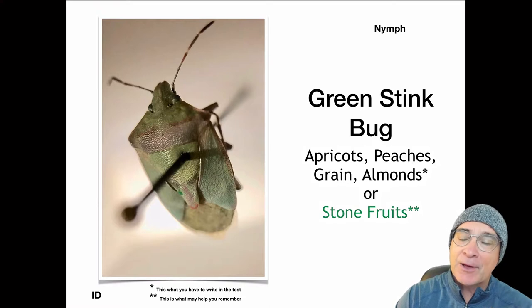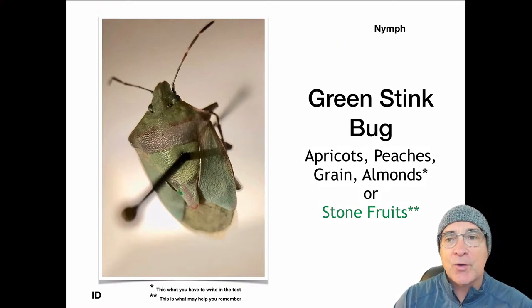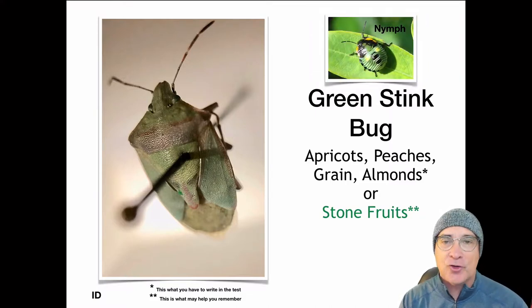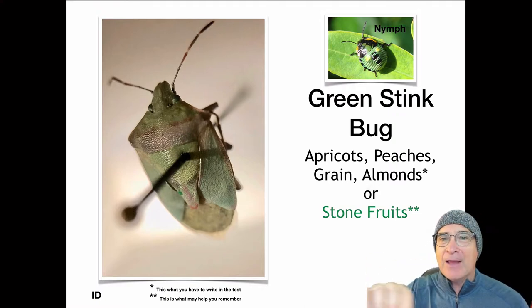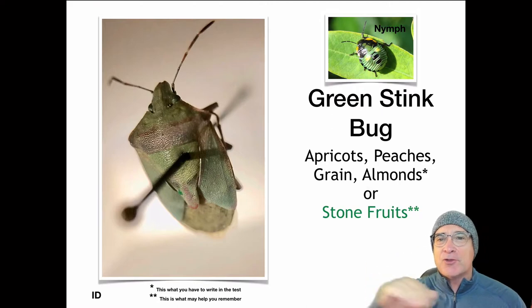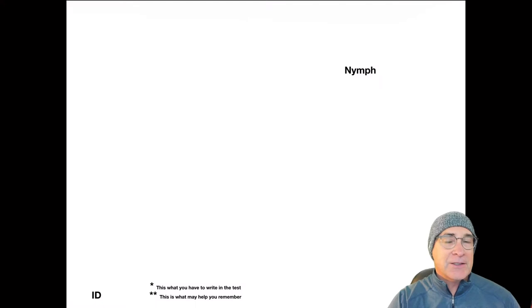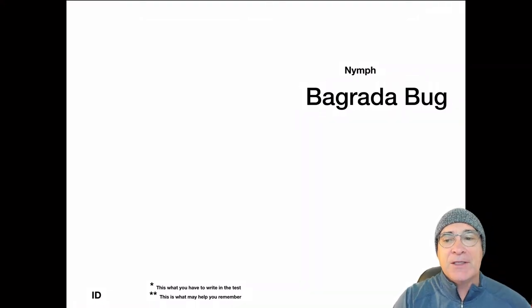Stink bugs primarily focus on stone fruits — again, apricots, peaches, almonds, and grains. This particular one looks like a squeeze toy you'd give to your dog. It has three, sometimes two, really broad black stripes and then light green stripes across the abdomen. And so that is the green stink bug.